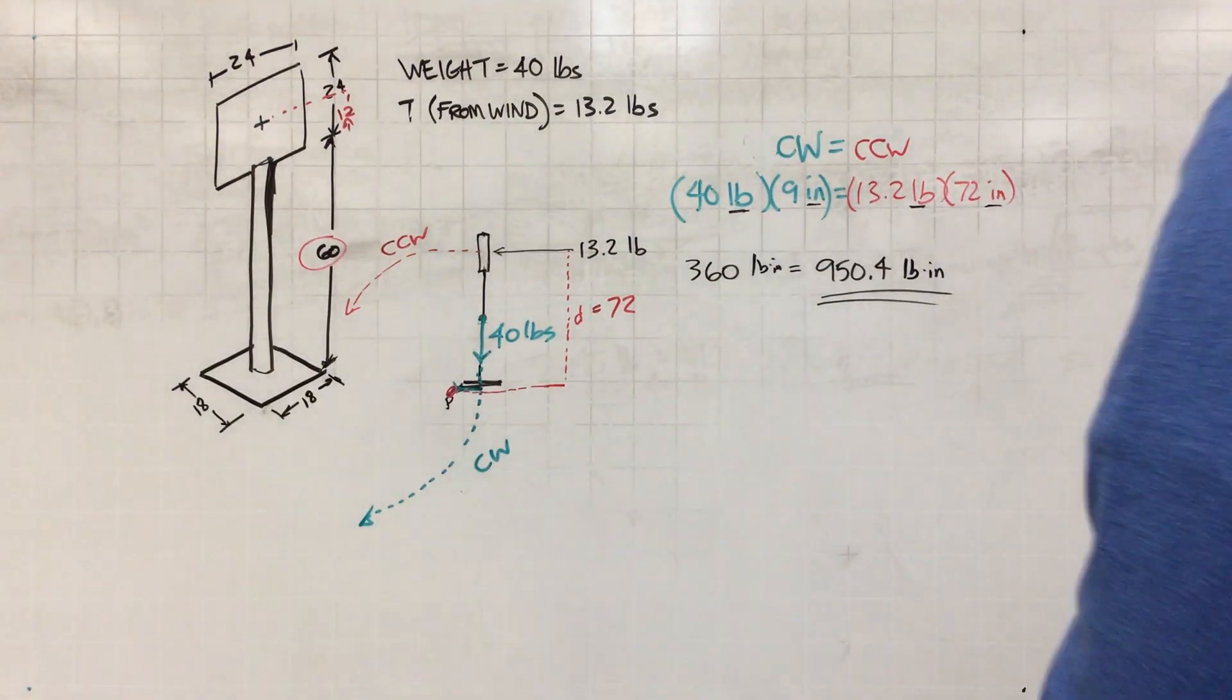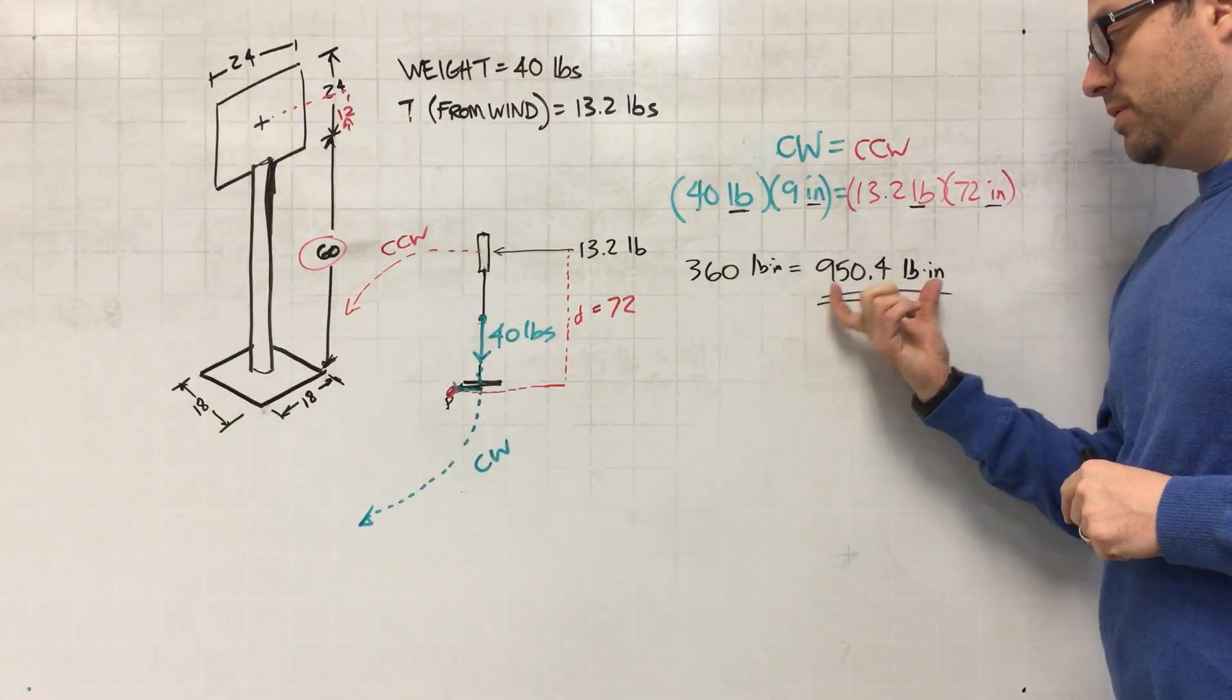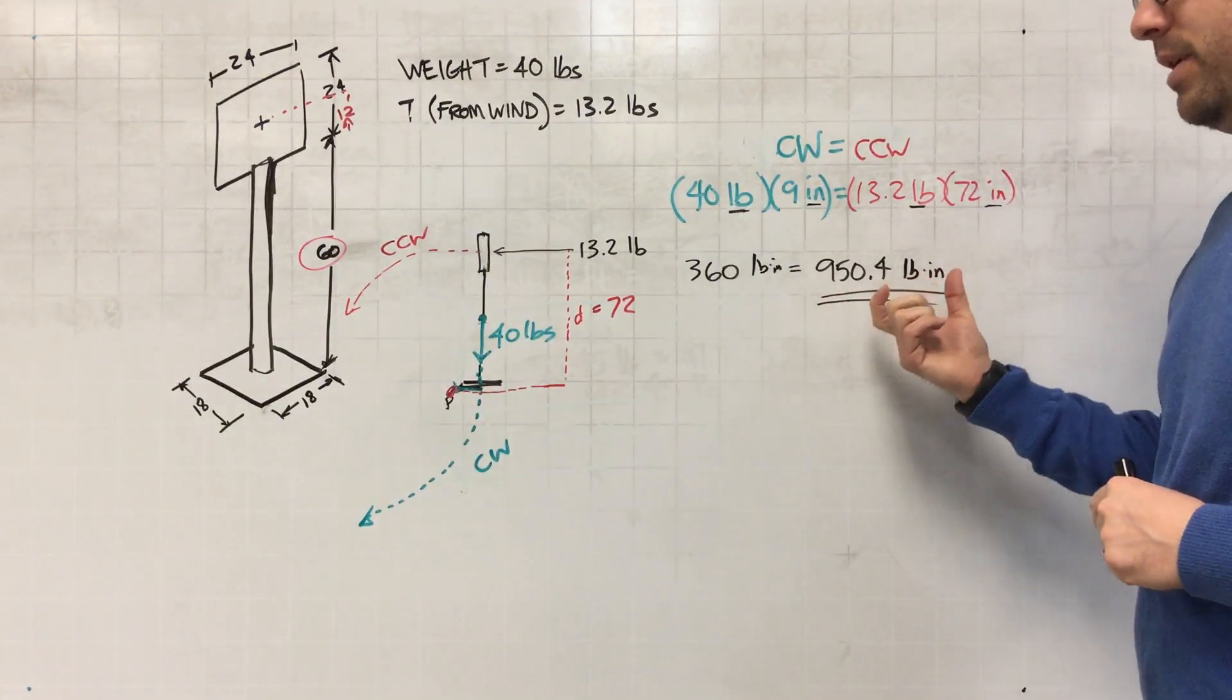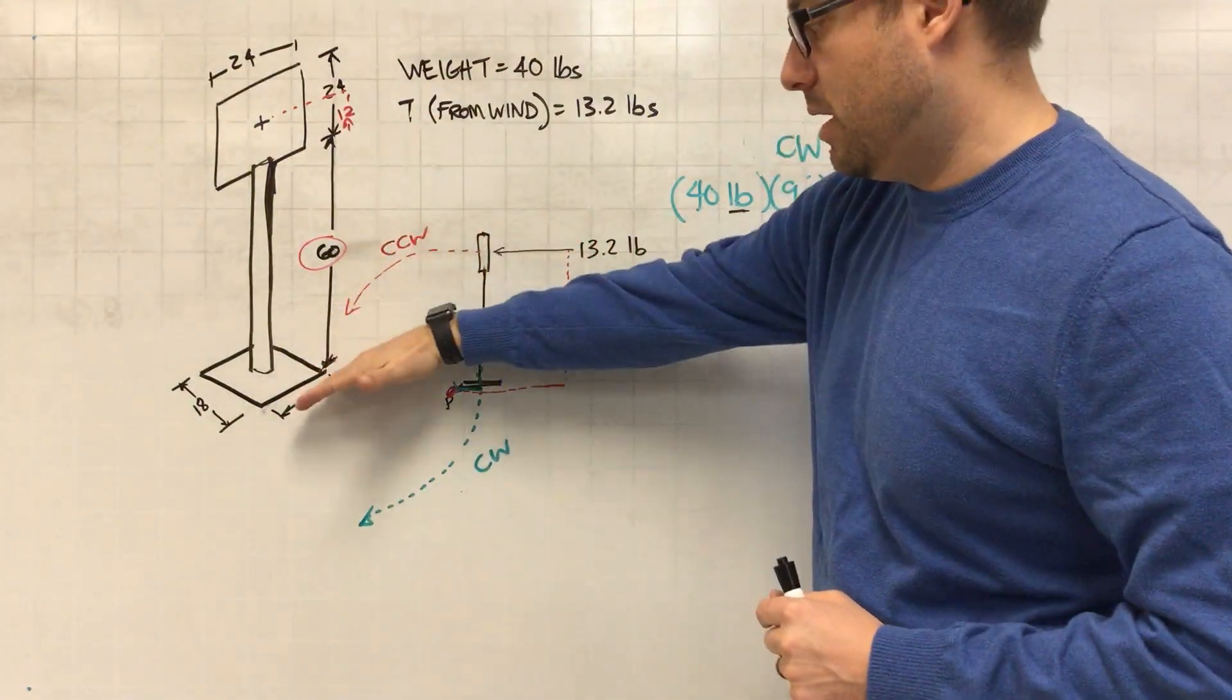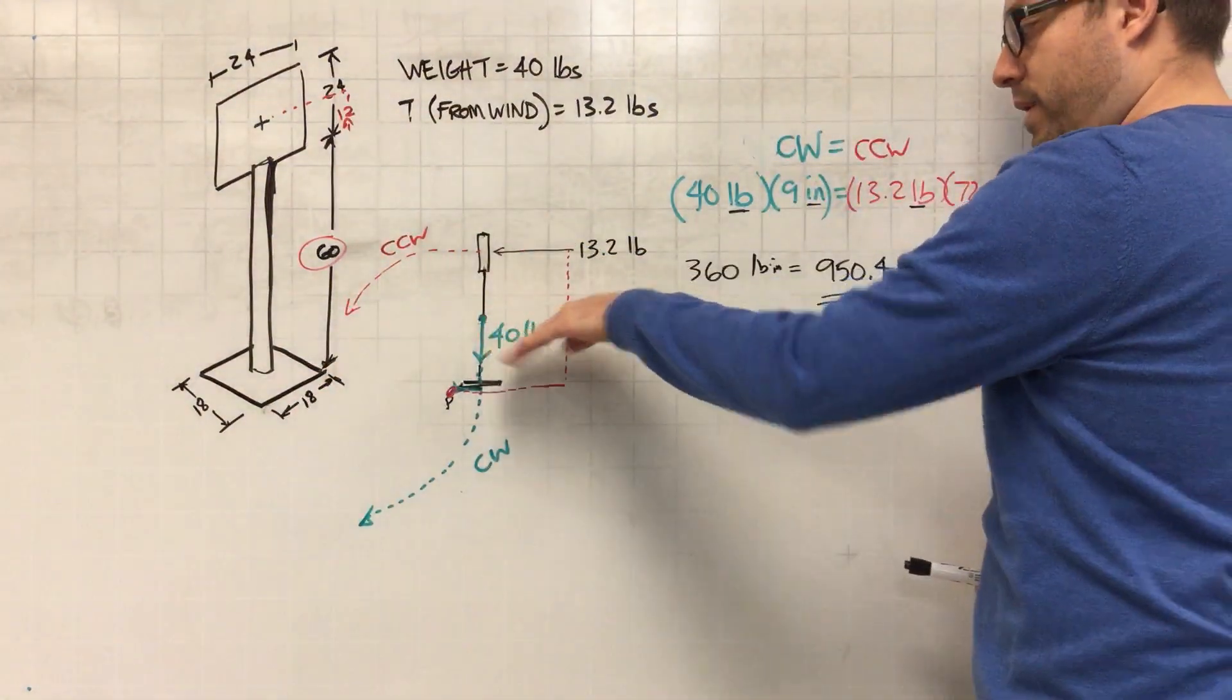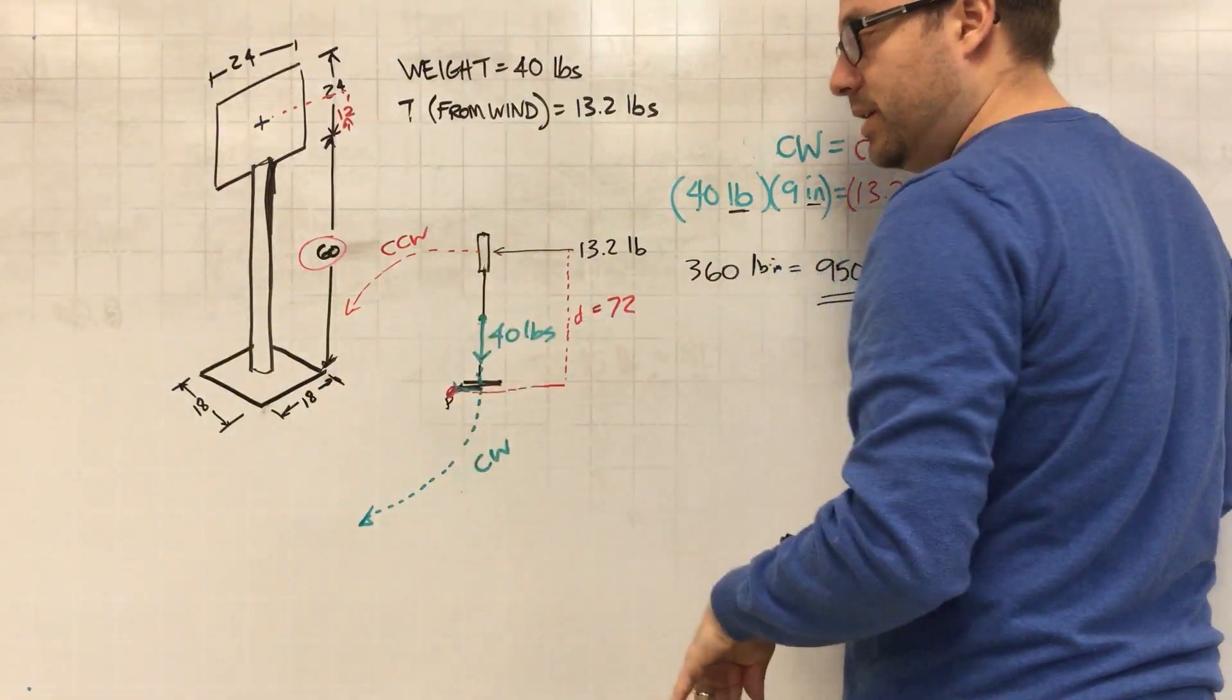Alright everybody, let's go on with the next part of this problem. What we found out in the first video is that the wind force was 950.4 pound inches of moment that it was creating to rotate the sign counterclockwise, and we know that the weight of the object created a moment of 360 pound inches to keep it in place.